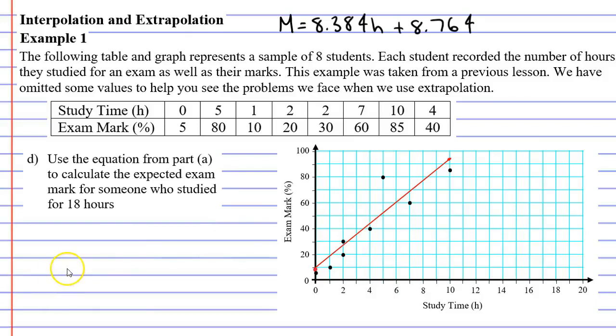Let's now move on to question D. This time it wants us to use the equation that we got from part A to calculate the expected exam mark for someone who studied for 18 hours. So we're going all the way over here to the right at 18 hours.